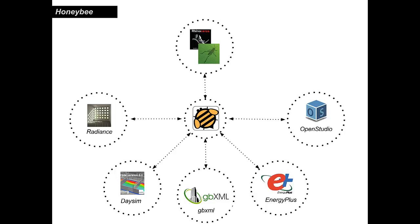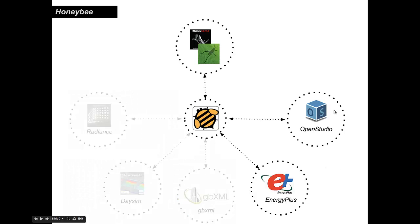So Honeybee, as you may already know, does a lot of different things. It connects Rhino Grasshopper — our wonderful 3D geometry interface — to a number of different open source platforms for daylighting. Radiance is a rendering engine, DaySim is a tool for evaluating daylight, and you can also export to GBXML, which is becoming a standard for a lot of energy modeling. But the focus of this series is going to be on the connection between Rhino Grasshopper and EnergyPlus and OpenStudio — projects funded by the Department of Energy that are open source, very good ways of fully energy modeling buildings.